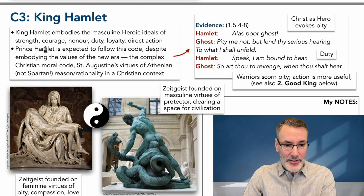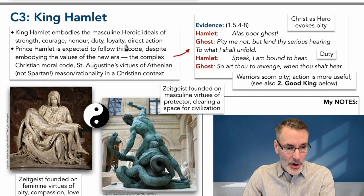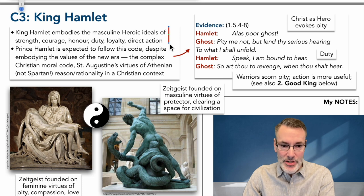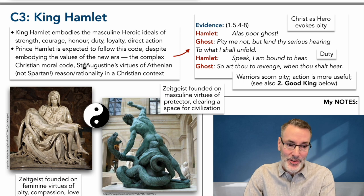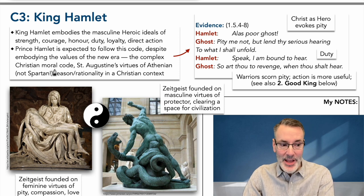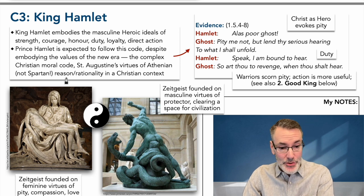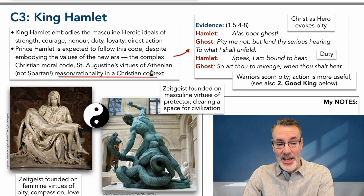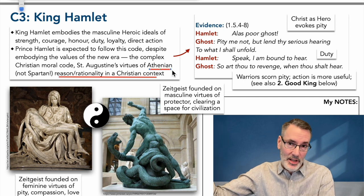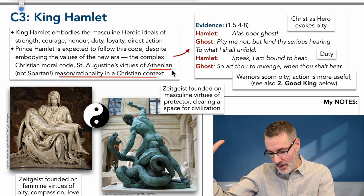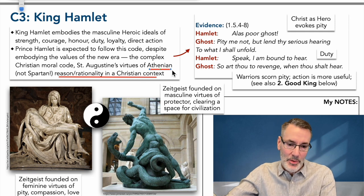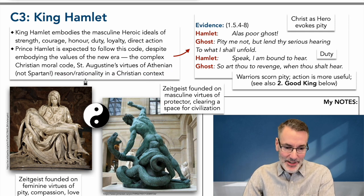King Hamlet embodies the masculine heroic ideals of strength, courage, honor, duty, loyalty, and direct action — none of which Hamlet possesses, but he's expected to follow this code despite embodying the values of the new era: the complex Christian moral code, St. Augustine's virtues of Athenian reason, rationality in the Christian context. Western civilization got a lot of its intellectual benefits from the Athenians — not the Spartans, because the Spartans were more like old King Hamlet, the warriors — but the Athenians were the learners, the thinkers.